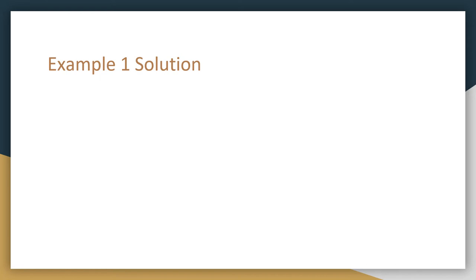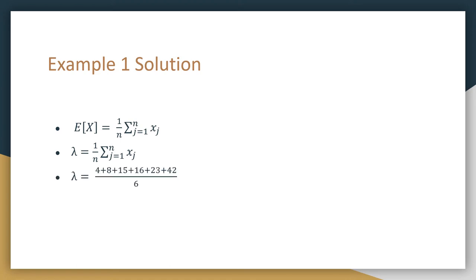For example one's solution, we set the expectation of X equal to our sample mean: (1/n) times the sum of our X_j's. We know from the Poisson distribution that E[X] equals lambda, so we set lambda equal to the sample mean. Computing: (4 + 8 + 15 + 16 + 23 + 42) / 6, we get lambda-hat equals 18. The hat notation indicates this is an estimation of the parameter.